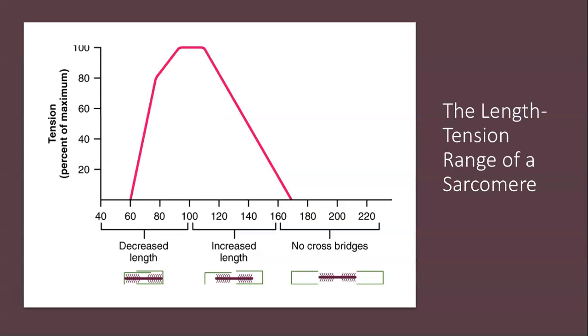Then I want to talk about the length-tension range of a sarcomere. When a skeletal muscle fiber contracts, the myosin heads attach to actin to form cross bridges, followed by those thin filaments sliding over the thick filaments as the myosin heads pull the actin. That results in the sarcomere shortening, creating the tension of the muscle contraction.